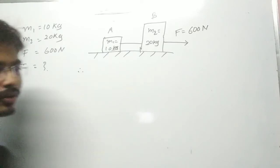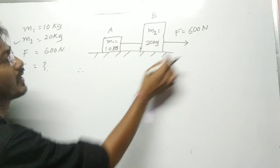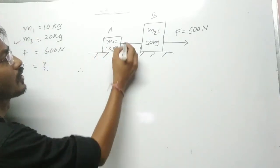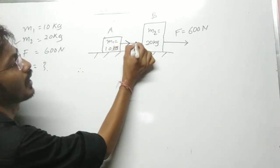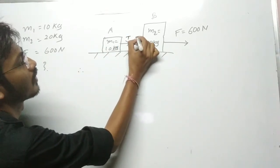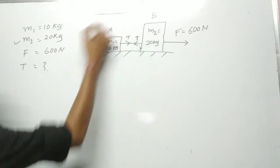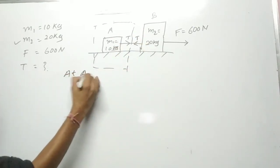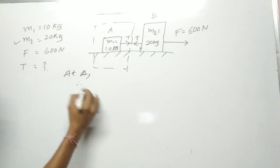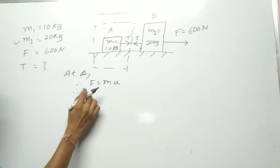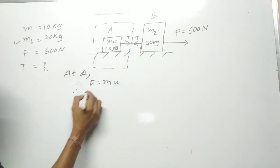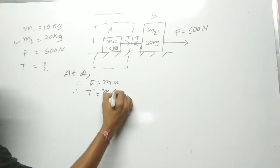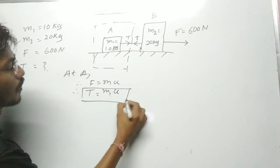Based on that we have to write the equations and find out the tension. Force apply ho raha hai, toh string mein tension generate hoga. Now for portion at A, as per Newton's second law, F = ma. So at A, F ki jagah tension lag raha hai, so we write T = m1 into a — that is equation number one.